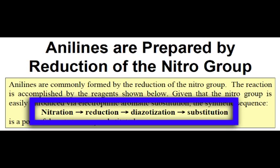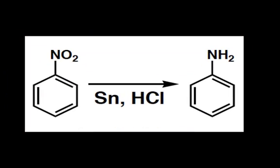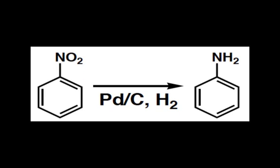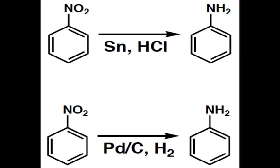First, let's look at how we convert this nitro group to an amine. Nitro-substituted benzene can be reduced to an aniline by treatment with either a tin reagent and hydrochloric acid, or a hydrogenation catalyst such as palladium on carbon under an atmosphere of hydrogen. Both reactions can be utilized to reduce the nitro group, and it is often compound-specific as to which reaction conditions are chosen.